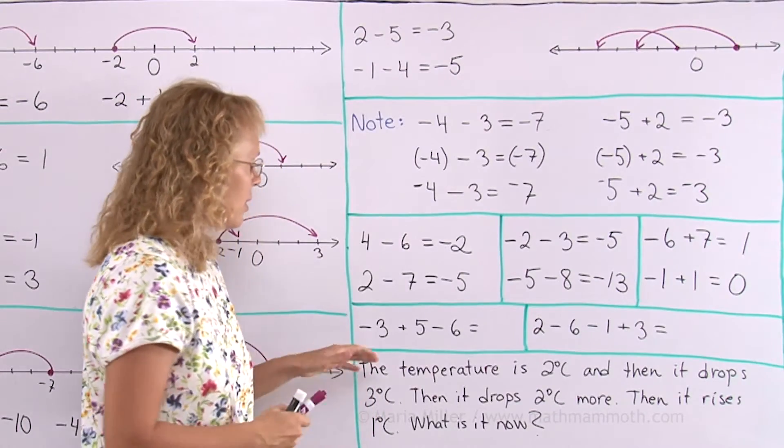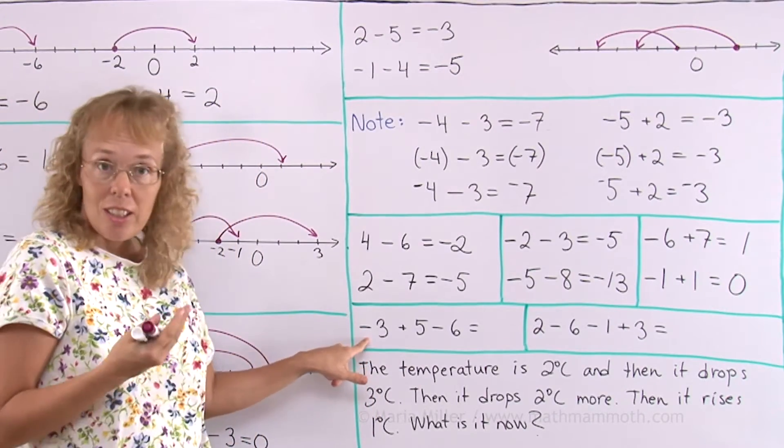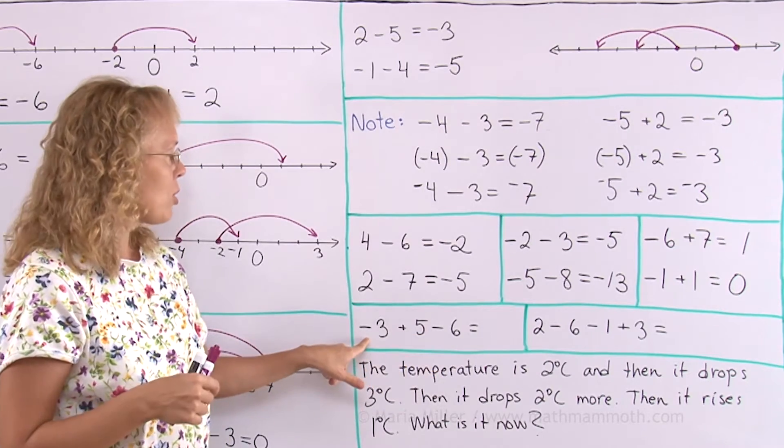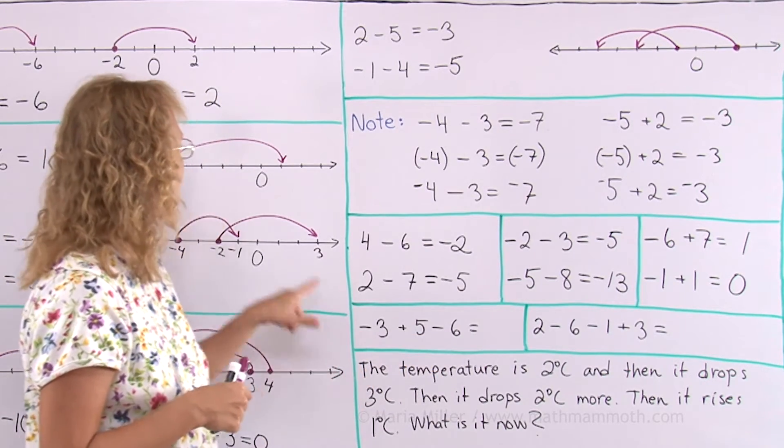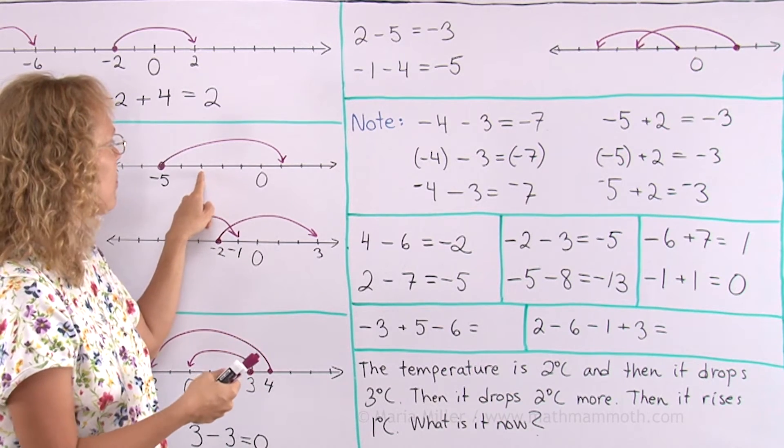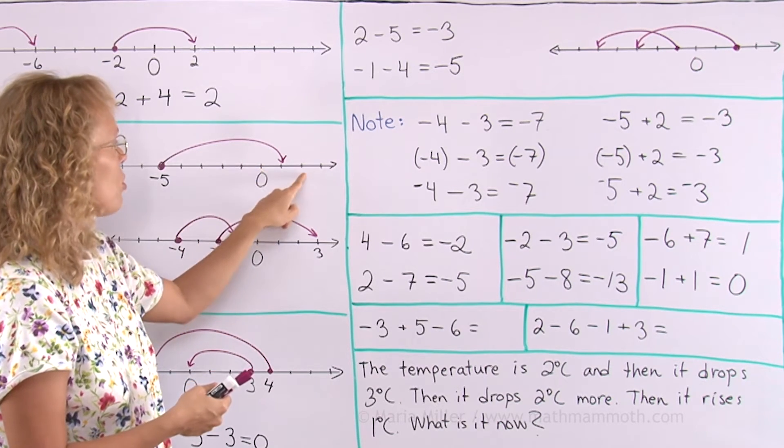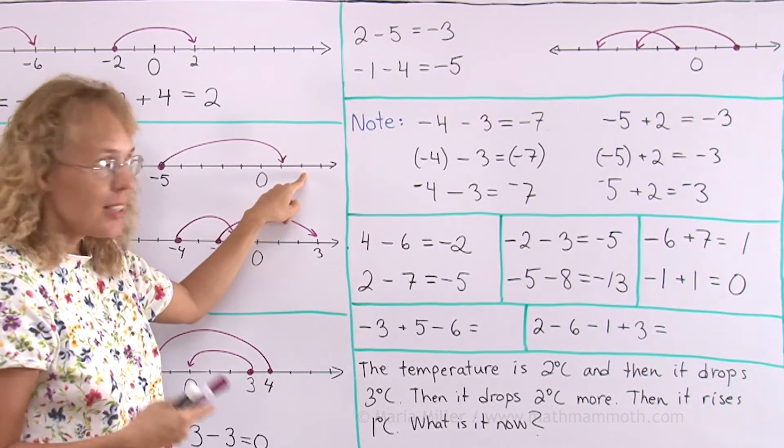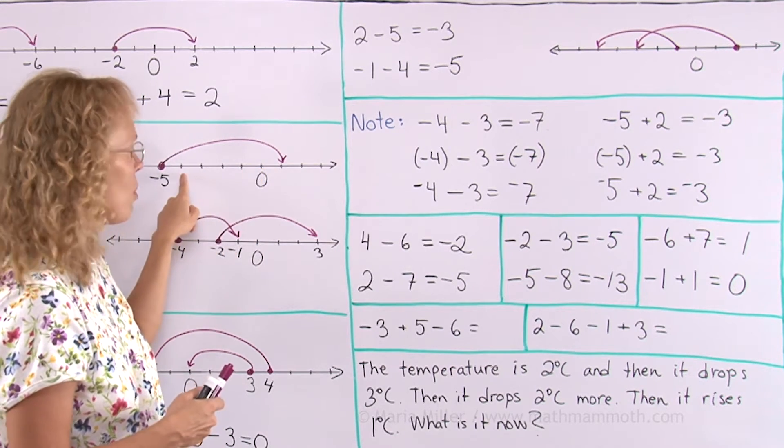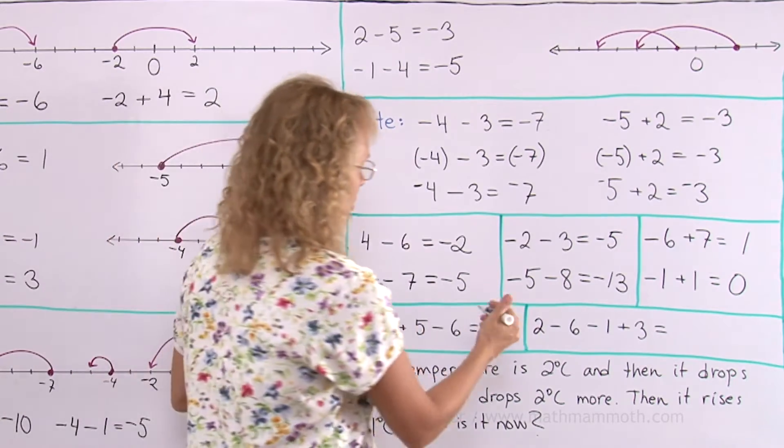Now how about these? The same applies. You can think of the first number as your starting point. Then these are movements. So you start at negative 3, like here for example. And then you go 5 steps towards the positives. That would land you at 0 and 2 steps here. And then you go 6 steps towards the negatives. So first these 2 and then 4 more. We are at negative 4 therefore.